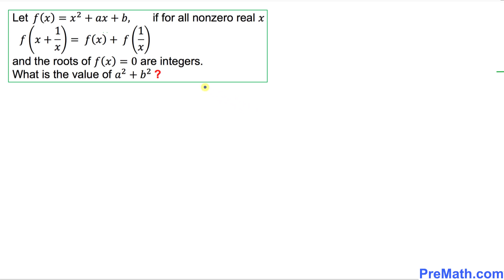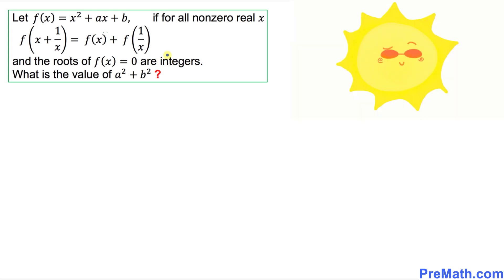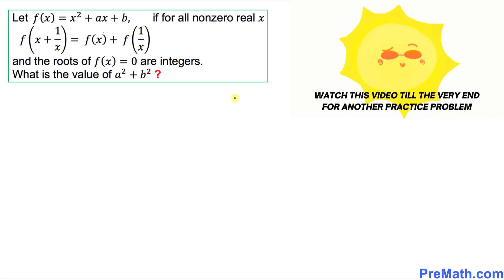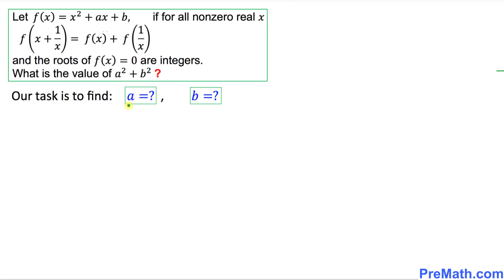Welcome to pre-math. In this video tutorial, we are going to find the value of a squared plus b squared, given that f(x) = x² + ax + b, with two conditions: f(x + 1/x) = f(x) + f(1/x), and the roots of f(x) = 0 are integers. Please watch this video till the very end for an additional practice problem.